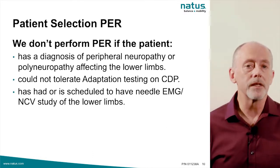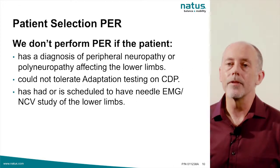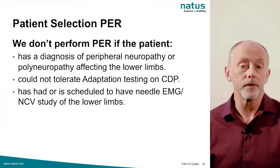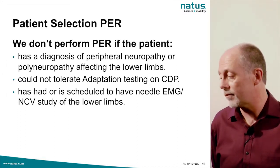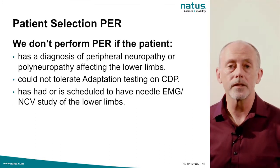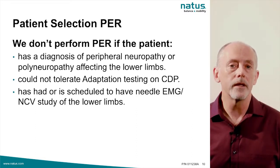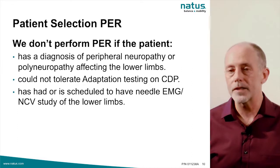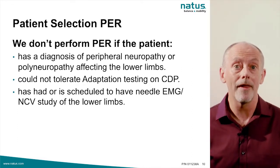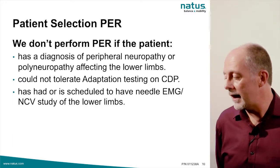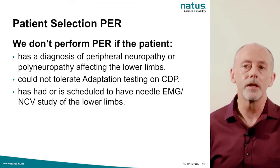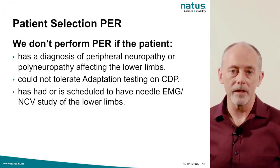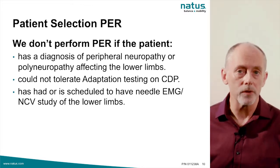If a patient comes in already diagnosed with peripheral neuropathy, polyneuropathy, or radiculopathy affecting the lower legs, we would not go on to the Postural Evoked Response Test because it's not going to provide any additional information. If a subject could not tolerate the adaptation test on computerized dynamic posturography, we would not do the PER Test because they'd fall on that as well. And if that patient has already had a needle EMG of the lower limbs, we would not proceed because it would essentially be repeating the same sort of investigation.